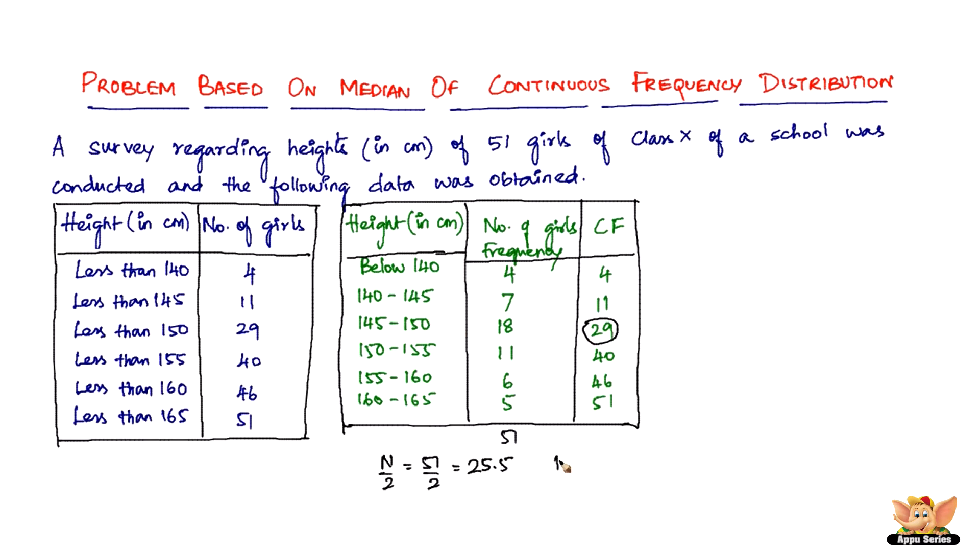So once you get this data, we have l equals 145, and then we have the frequency corresponding to this equal to 18, and then the cumulative frequency corresponding to the preceding group of this is 11, so F equals 11. And then we've got the size of the class interval is 5, so h equals 5.